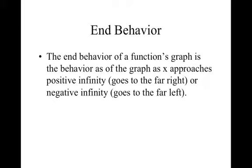Polynomial functions have two ends — the left end and the right end — and that's how you need to think of them. The end behavior of a function's graph is the behavior of the graph as x approaches positive infinity, which goes to the far right (your right end), or negative infinity, which goes to the far left (your left end).